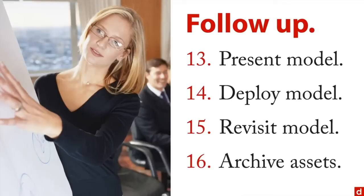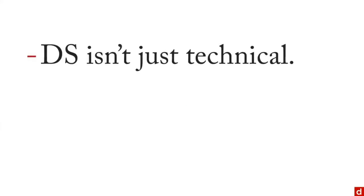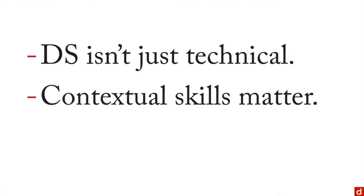So those are the general steps of the data science pathway. In sum, we get three things from this. First, data science isn't just a technical field — it's not just coding. Things like planning, presenting, and implementing are just as important. Also, contextual skills — knowing how it works in a particular field and knowing how it will be implemented — those skills matter as well.